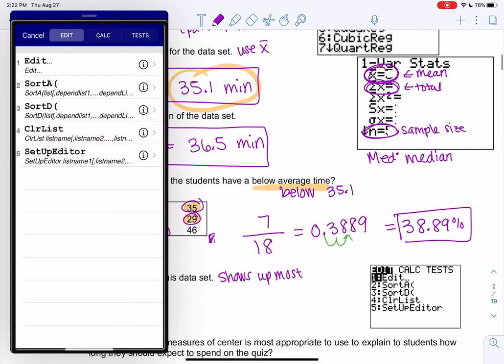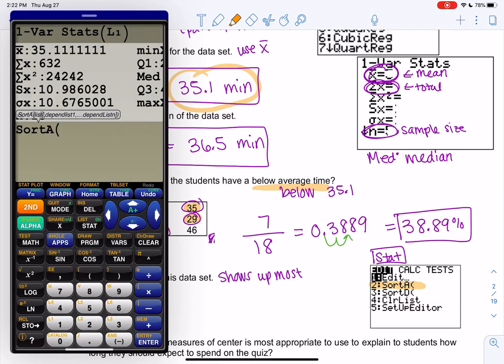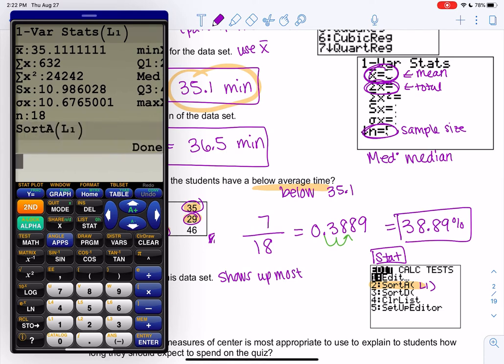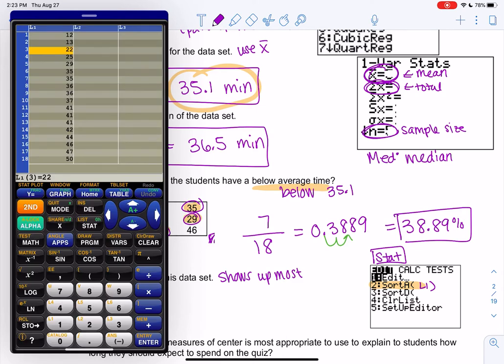So to sort the data, again, I'm going to hit the stat button. This is going to be like our favorite menu. And you're going to go down to sort A for ascending. And then we have to tell it what to sort. So you're going to hit second one for L1. So you're going to tell it to sort L1. And then hit enter. And it feels like it did nothing. But then we'll go back and we'll go back to stat edit. So stat edit is like our favorite menu. Stat edit is where the data is.